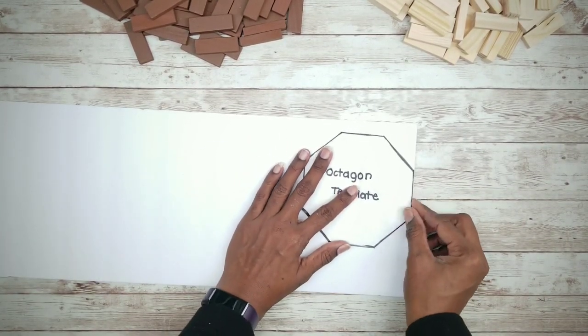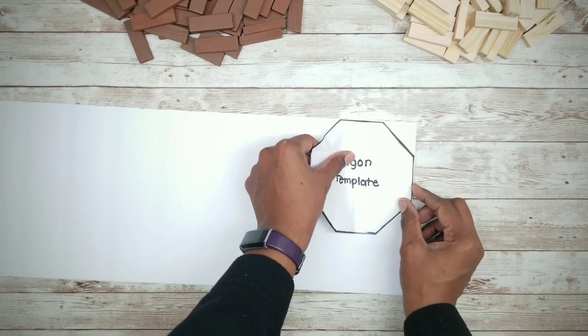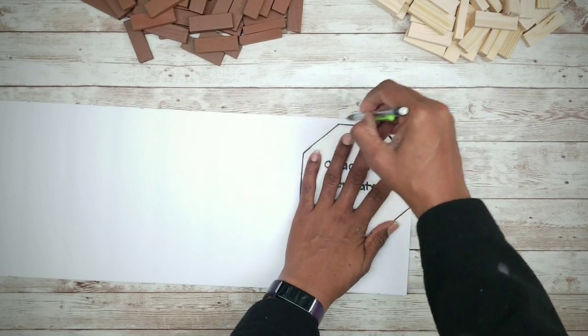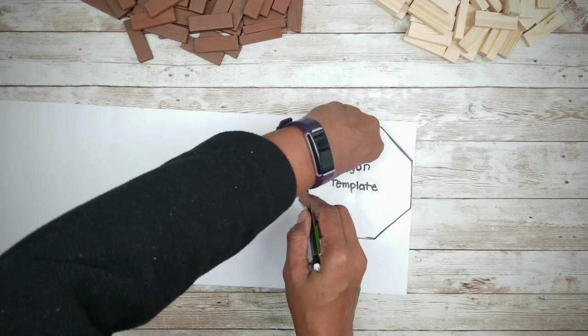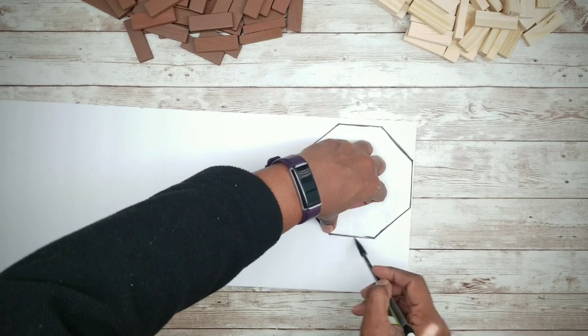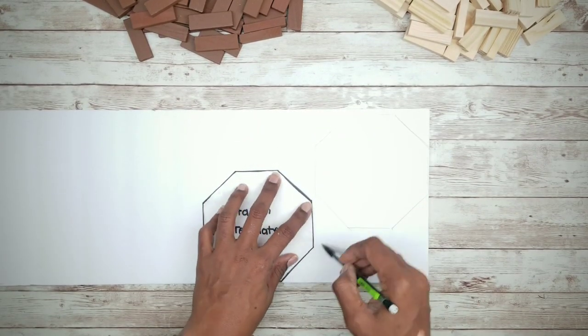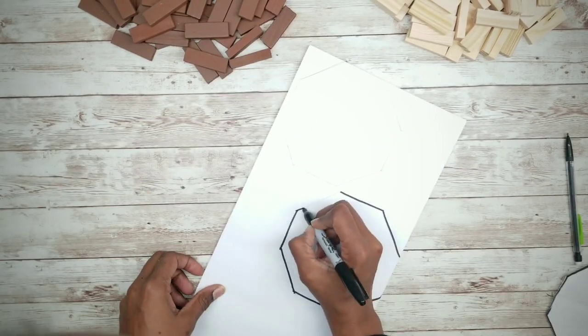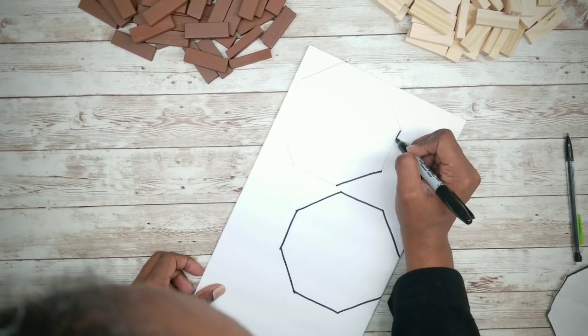All I am going to do now is trace that shape onto my foam board in two different places. Then I am simply going to trace over it with a marker just so I can see it better.